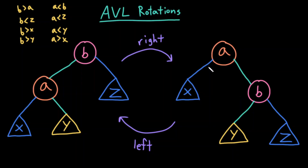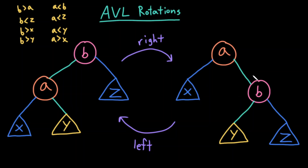In this AVL rotation, the things colored in dark blue — so X and the edge going into X, and Z and the edge going into Z — remain completely unchanged. Originally, X was the left child of A, and after the rotation, X is still the left child of A. Similarly, Z before the rotation was the right child of B, and after the rotation it's still the right child of B. So the only things that are changing are B, A, and Y — specifically what their edge relationships are.